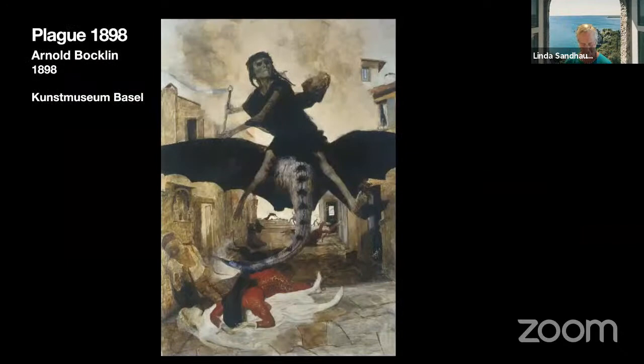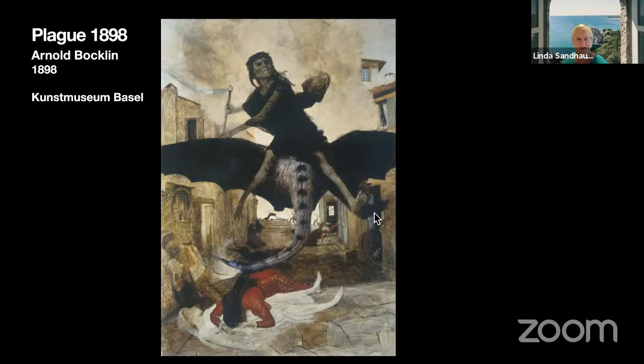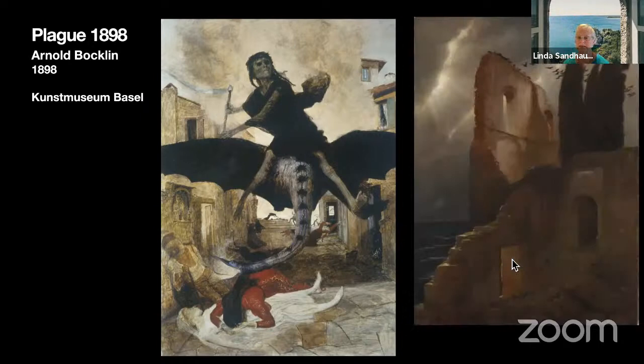A frightening interpretation of the Triumph of Death is by Swiss symbolist painter Arnold Bocklin, called Plague 1898, in reference to plague that broke out in Bombay, India that year. A monstrous, cadaverous death rides a winged bat-like creature and sweeps through a medieval village, striking down those in his path with his deadly sickle. The bat foreshadows the novel coronavirus that probably came from bats. The CMA holds Bocklin's painting Ruined by the Sea.